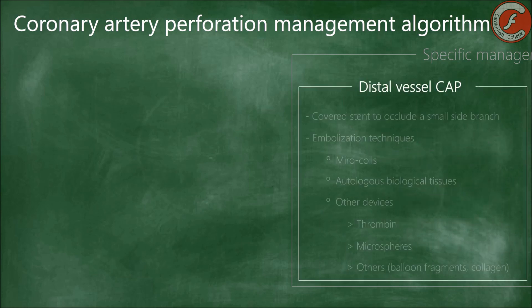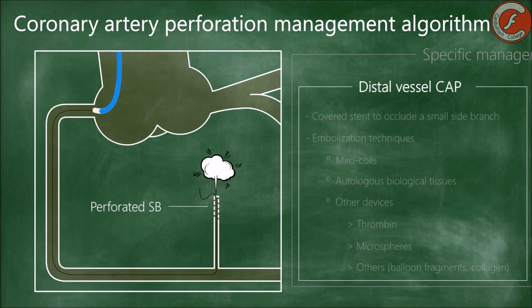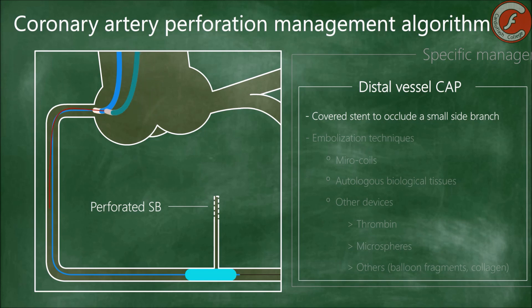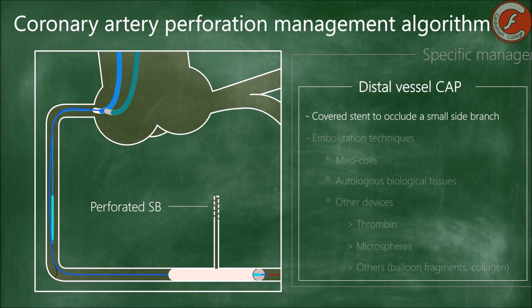When perforation occurs in distal coronary beds, the vessels often have such a small diameter or inaccessible location that it is practically impossible to navigate and implant a covered stent at that level. When the perforation occurs in a secondary branch, implantation of a covered stent in the main vessel could be recommended to seal the ostium of that branch and with it the bleeding. However, other therapeutic alternatives should be considered for heavily developed secondary branches, since local necrosis could be considerable.